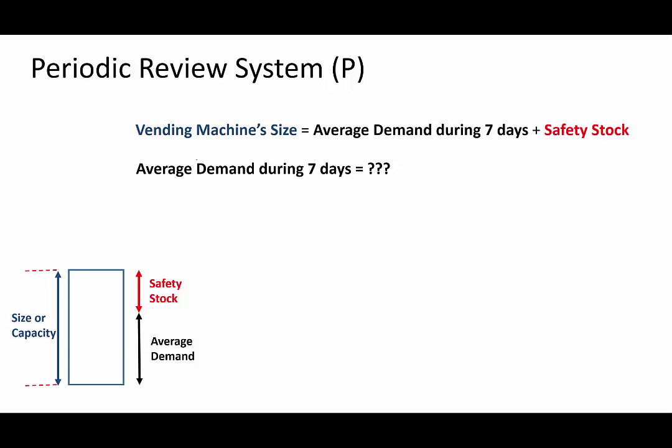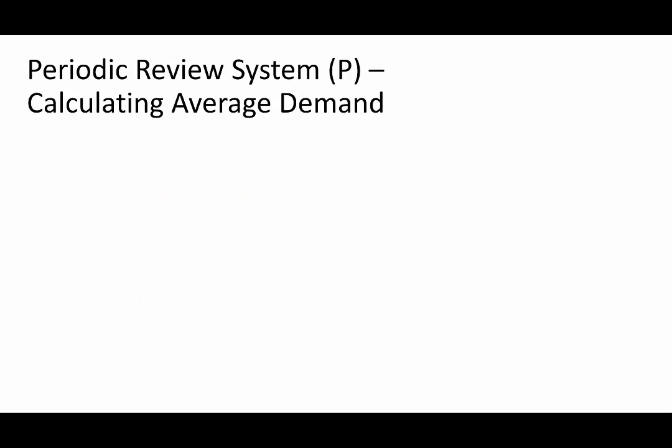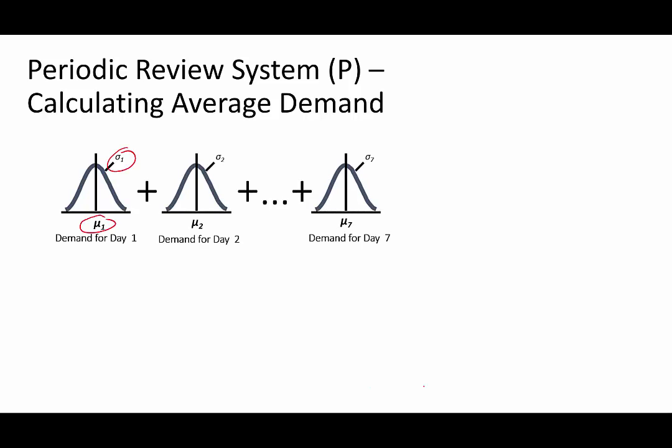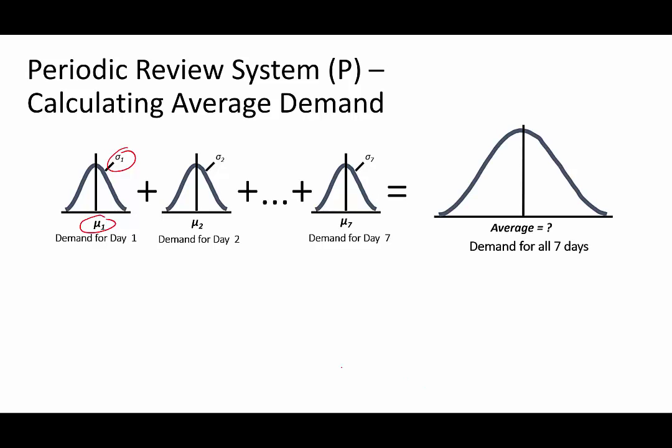As a first step, let's see how to calculate the average demand during seven days. Assume we know the demand information for every day in terms of mean and standard deviation. Since we have seven days, we have seven means and seven standard deviations. We need to convert this daily information into weekly information. Make another assumption: assume the daily demand is independent of each other — that is, day one's demand will not influence the demand of day two, and so on.